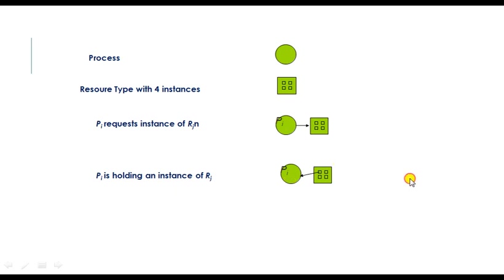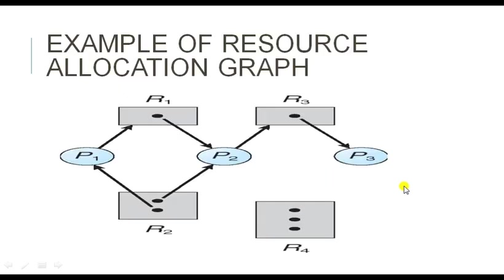Here is an example of a resource allocation graph. There are three processes: P1, P2, P3. P1 is requesting resource R1, R1 is assigned to P2, P2 is requesting resource R3, and R3 is assigned to P3. Resource R2 has multiple instances: one instance is assigned to P1 and another instance is assigned to P2. Resource R4 has three instances but is idle. This is one example.